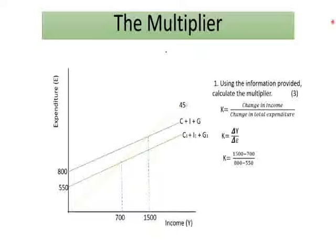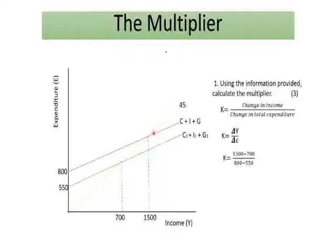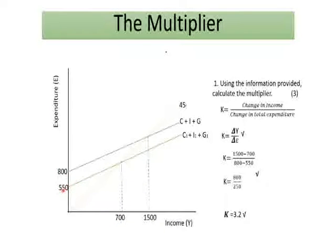The change in income: income changed from $1,500 to $700. We can see this from the symbols given here — CIG, then C1, I1, G1 — meaning it moved from the first set of values to the second. So income changed from $1,500 to $700. From the expenditure side, we see that it changed from $800 to $550.